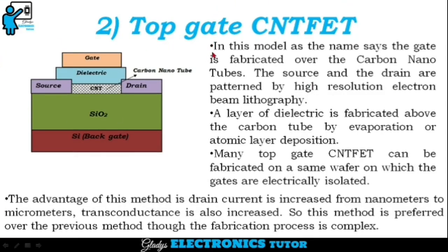Next, we'll see about top gate CNTFET. In this model, as the name says, the gate is fabricated over the carbon nanotubes. The source and drain are patterned by high-resolution electron beam lithography. A layer of dielectric is fabricated above the carbon nanotube by evaporation or atomic layer deposition. Many top gate CNTFETs can be fabricated on the same wafer, where the gates are electrically isolated. The advantage is that drain current is increased from nanometers to micrometers and transconductance is also increased, so this method is preferred over the previous one, though the fabrication process is complex.